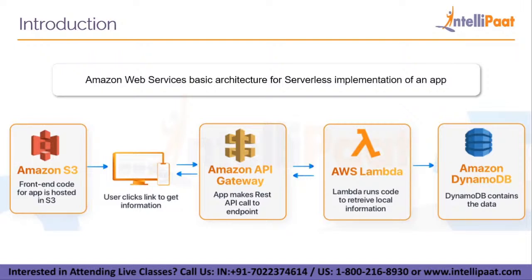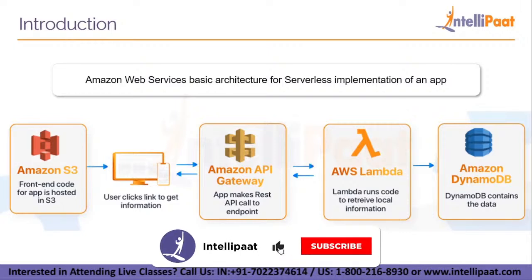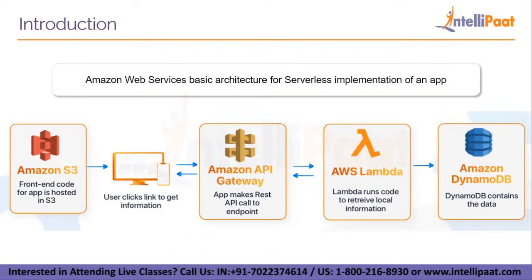After loading the website from S3 storage, users will click to get information or data, and this request goes through Amazon API Gateway, which is basically an endpoint for all your APIs put together. Your app makes a REST API call to the endpoint. When the user clicks on a link, it triggers a REST API call that goes through API Gateway, which in turn passes it to AWS Lambda. Lambda contains your running code, runs it, and fetches information from Amazon DynamoDB, which contains all your database data, then returns that output to API Gateway, which displays it on the user's screen.